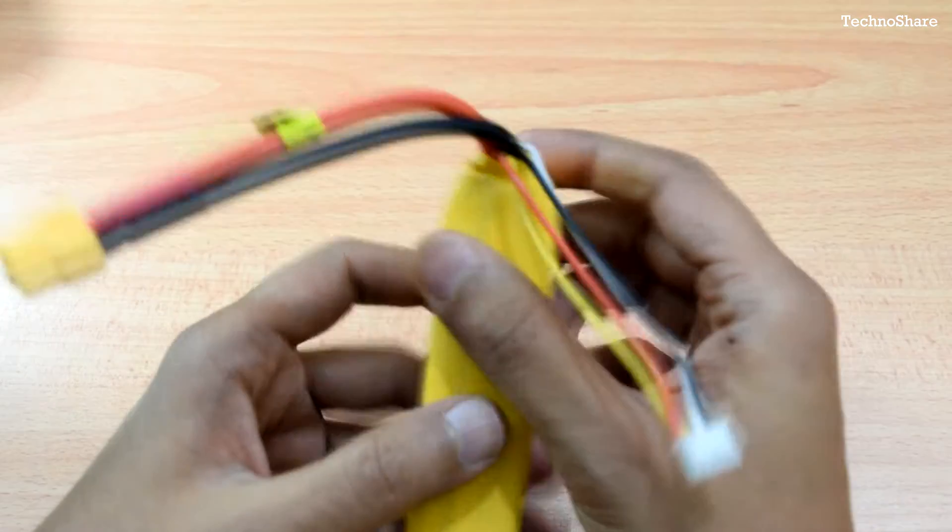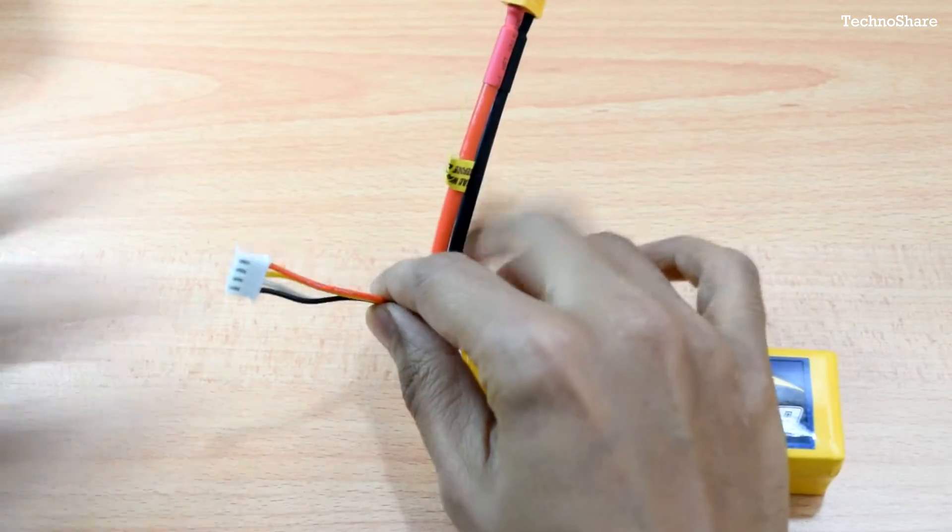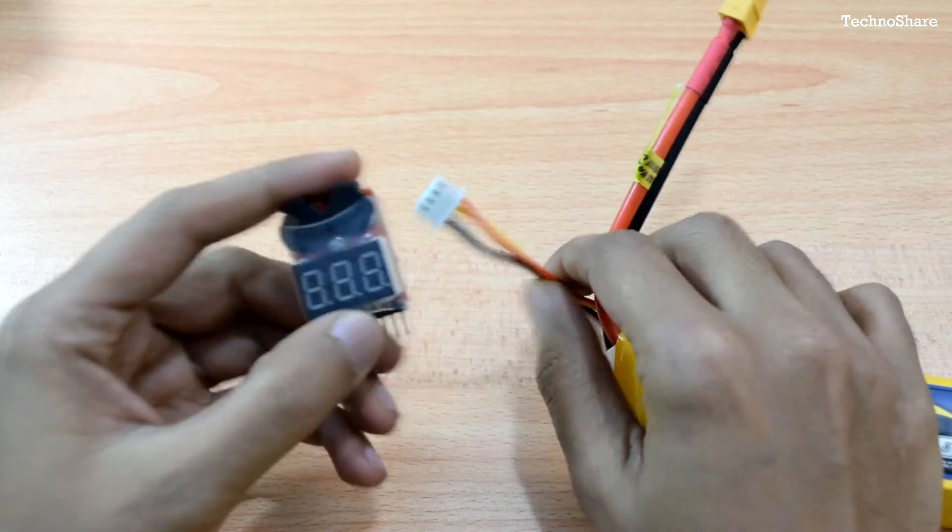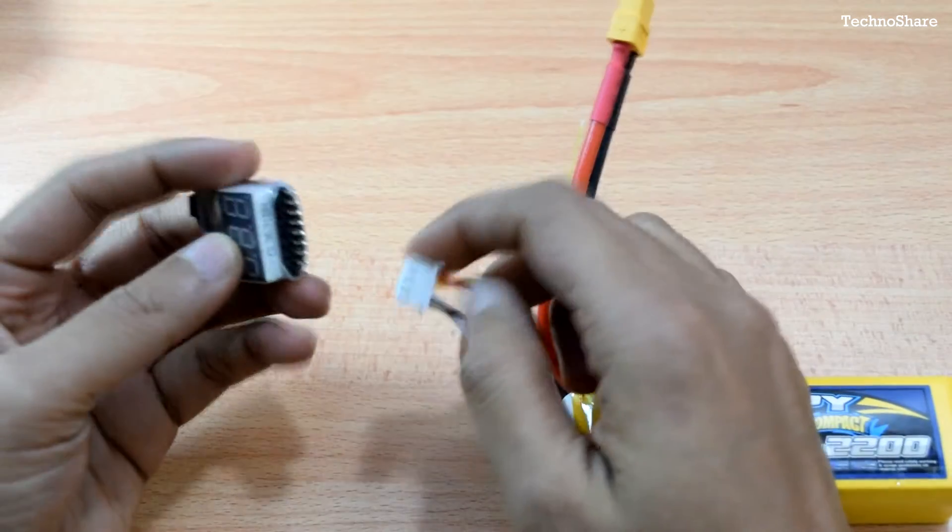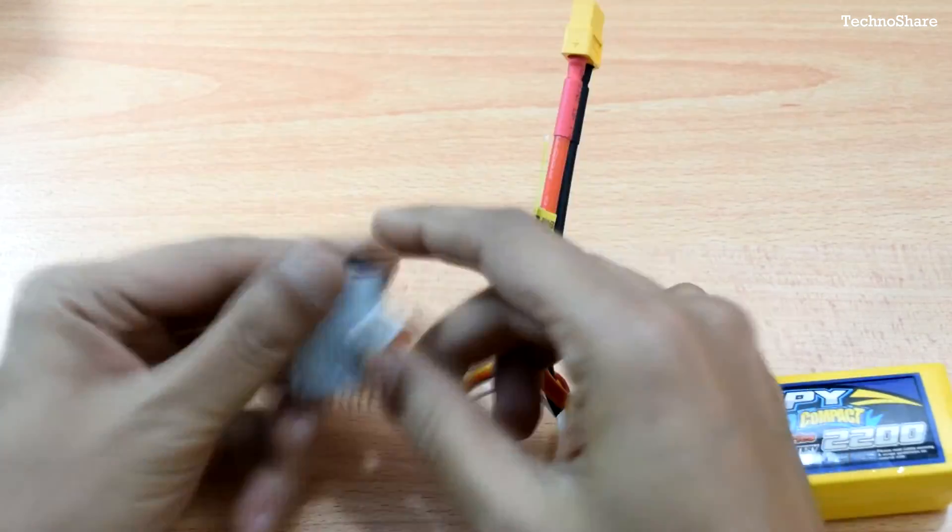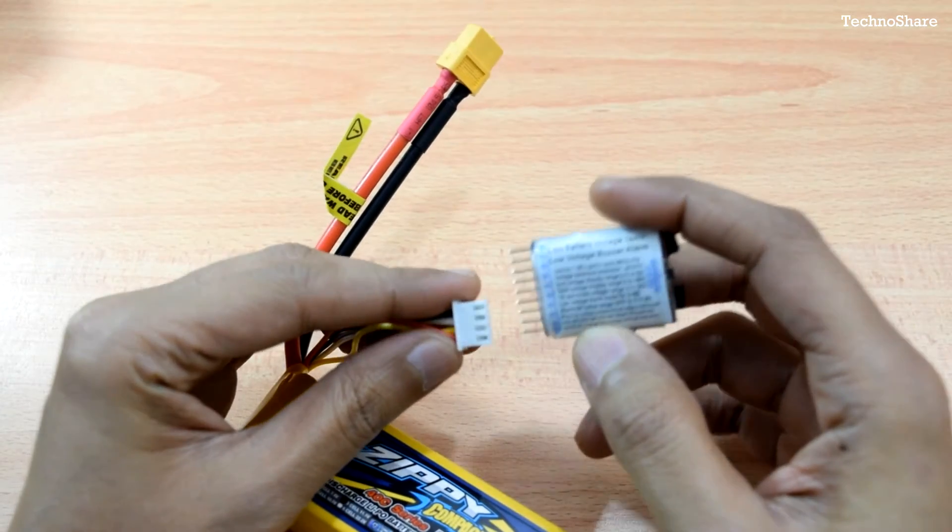Now let's look at the voltages across the individual cells. So I have this mini voltage monitor here that monitors the voltage across different cells. Let me go ahead and connect this. We should be careful in connecting this because it has some polarities.